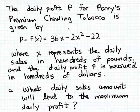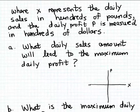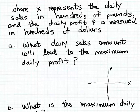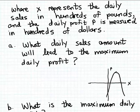Since the leading coefficient of this quadratic function is negative 2 — that's the coefficient of the x-squared term — we know that when we graph this quadratic function, the parabola is going to open down. With a downward-opening parabola, the vertex is where the profit is going to be maximum. The x-coordinate of the vertex gives us the daily sales for maximum profit, and the y-coordinate gives us the maximum daily profit.